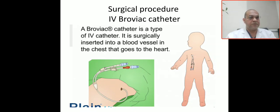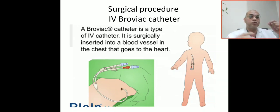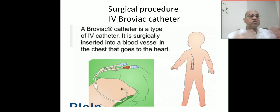Our case today is very interesting and related to surgical cases and surgical procedures. First, you have to know what a Broviac catheter is. This is a Broviac catheter — a type of IV catheter that is surgically inserted into a blood vessel in the chest that goes to the heart. It looks like a central venous catheter.